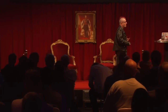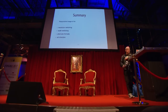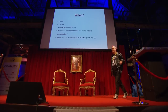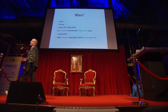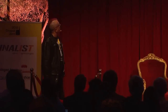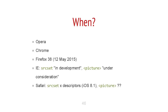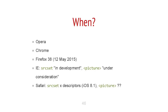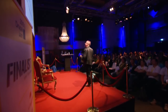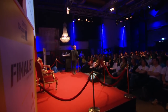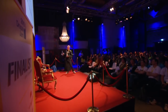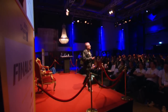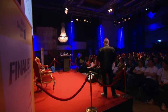In summary, responsive images are good for resolution switching, width switching, alternate formats, and art direction. They're in Opera now, in Chrome now, and coming to Firefox 38 in 12 days. In Internet Explorer, srcset is in development and picture is under consideration. In Safari, srcset X descriptors for DPI switching are available now in iOS 8.1, but Safari — being the North Korea of browsers — has not said anything about picture. One day they'll probably catch up.